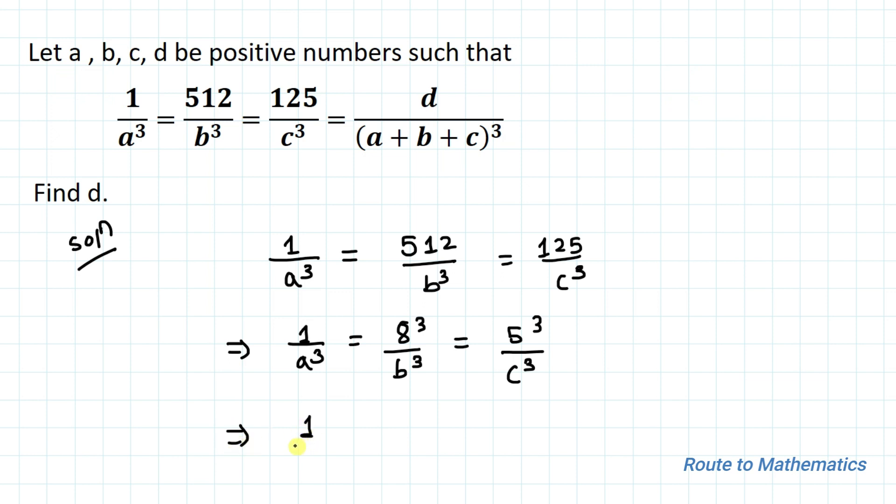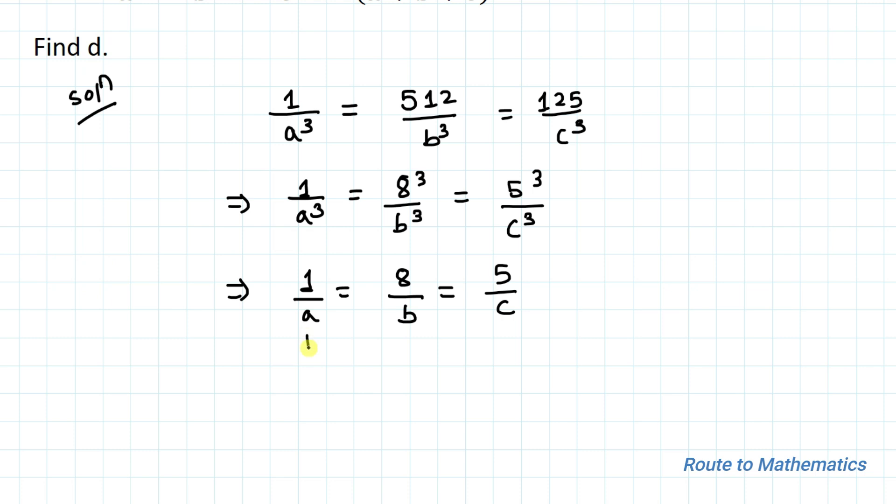So in the next step, by equating these two, we have 1/a = 8/b. This implies, by cross multiplication, b = 8a. We found b in terms of a.